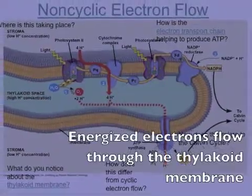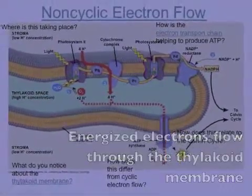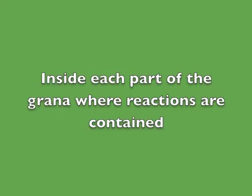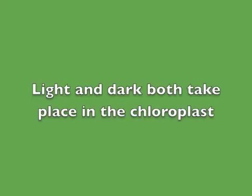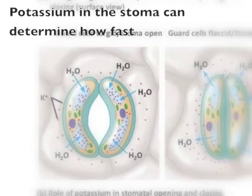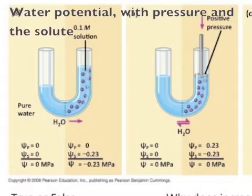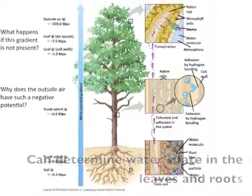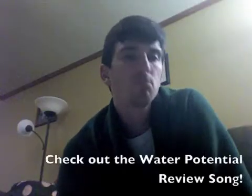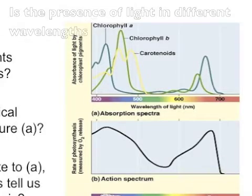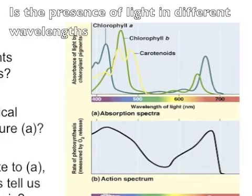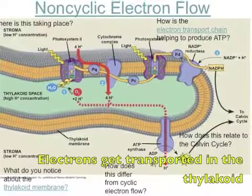Excited electrons flow through the membrane. Inside the chloroplast is the stroma, where reactions are contained. Light and dark reactions both take place in the chloroplast. Potassium in the stomata can determine water potential — with pressure and solute concentration determining water movement in the roots. The presence of light at different wavelengths determines if it all takes place.